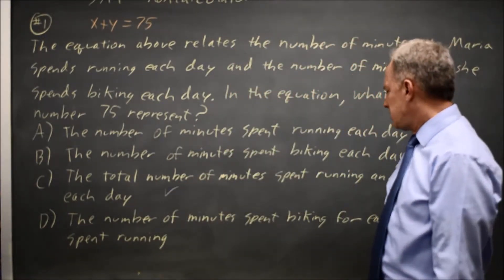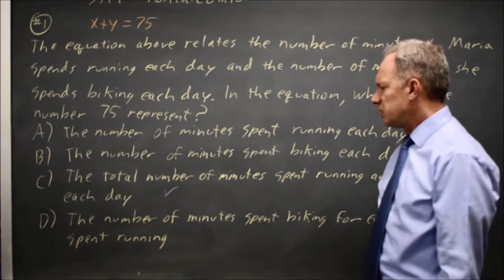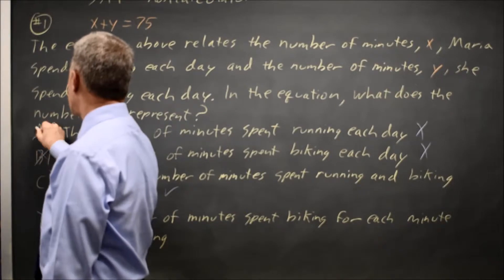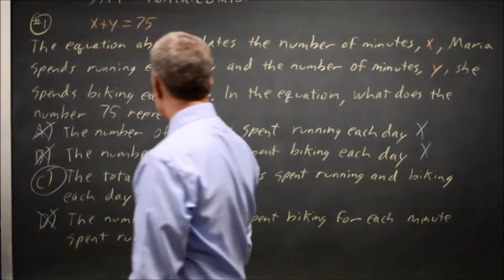Option D, the number of minutes spent biking for each minute spent running, doesn't make sense. That one was wrong. We already saw that A and B were wrong. Choice C is the correct answer.